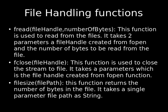fclose takes a parameter which is the file handle created from the fopen function. This function is used to close the stream to the file.